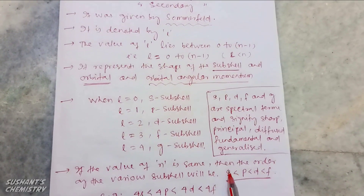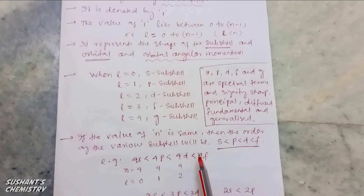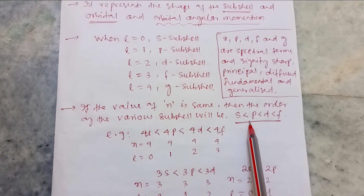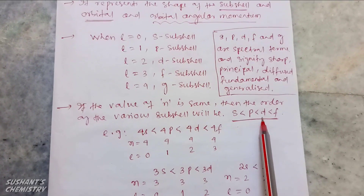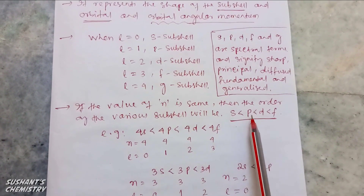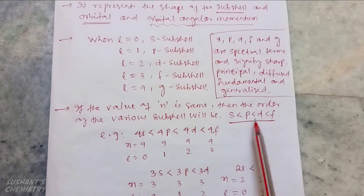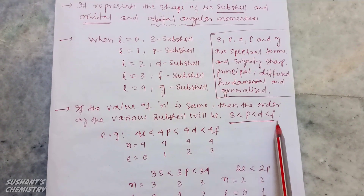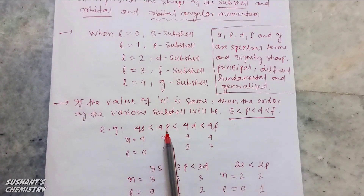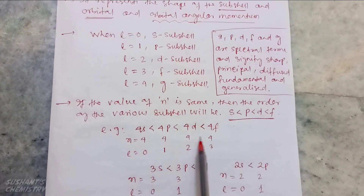If the value of n is the same for different sub-cells, then the order of the various sub-cells will be s less than p less than d less than f. That is, the energy of the s sub-cell is less than p sub-cell, is less than d sub-cell, less than f sub-cell — energy increases gradually. For example, consider 4s, 4p, 4d, and 4f sub-cells where the value of n remains constant.